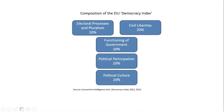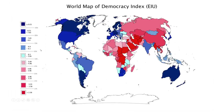The Economist Intelligence Unit has constructed a composite index with five components, each counting for 20%. As we said in the lecture, strictly speaking, only two of these — electoral processes and political participation — cover the same ground as the voice and accountability indicator. So we shouldn't really expect a strict match between the two sets of results.